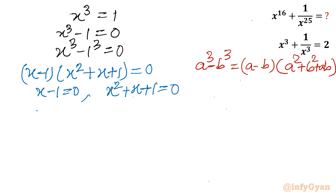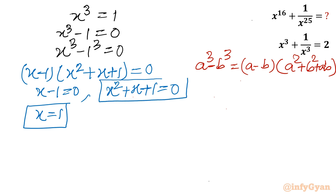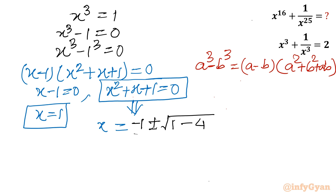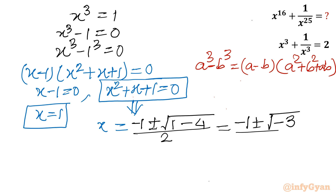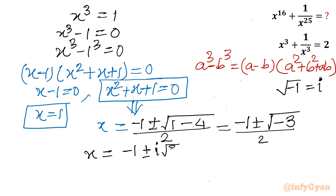From the first factor, x − 1 = 0 gives x = 1. Now for the quadratic x² + x + 1 = 0, we apply the quadratic formula: x = [−b ± √(b² − 4ac)] / 2a = [−1 ± √(1 − 4)] / 2 = [−1 ± √(−3)] / 2. Since the square root contains a negative number, we use complex numbers: √(−1) = i, so x = (−1 ± i√3) / 2.